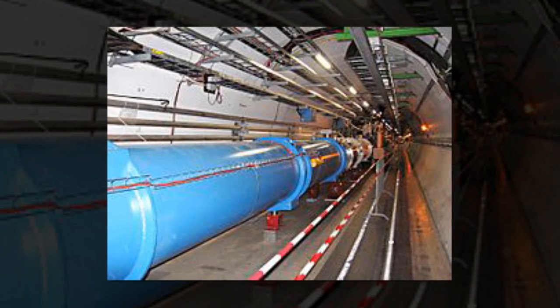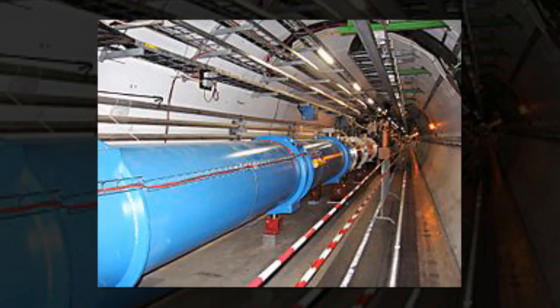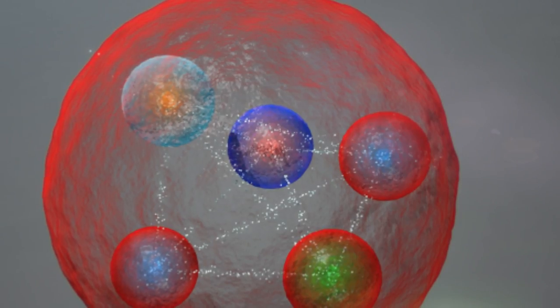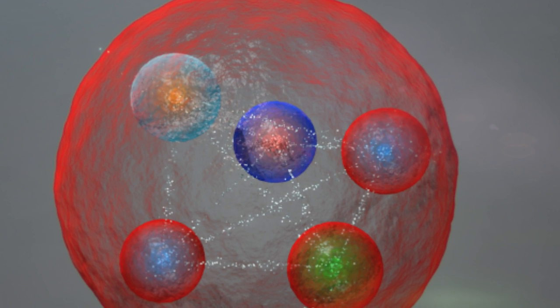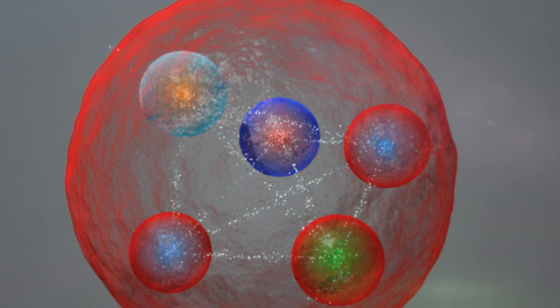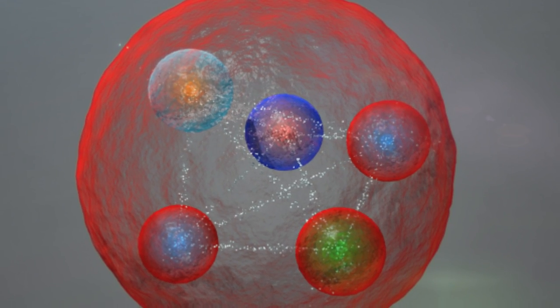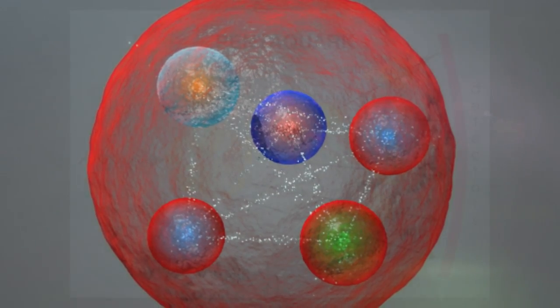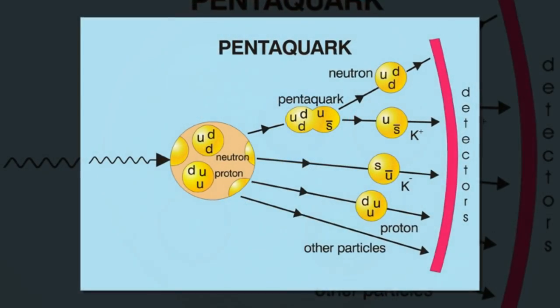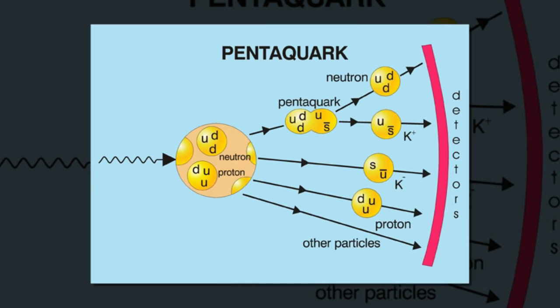In 2002, researchers at the Spring-8 synchrotron in Harima, Japan, caused a stir when they announced that they had discovered a pentaquark, roughly 1.5 times heavier than a proton, inferring its existence from the debris of collisions between high-energy photons and neutrons.